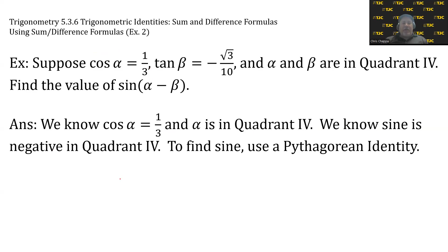Let's start with alpha. We know that cos α = 1/3 and α is in quadrant 4. We know sine is negative in quadrant 4. To find sine from cosine, we can use a Pythagorean identity.